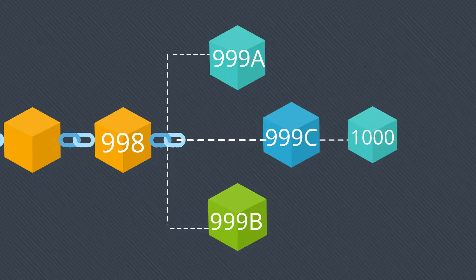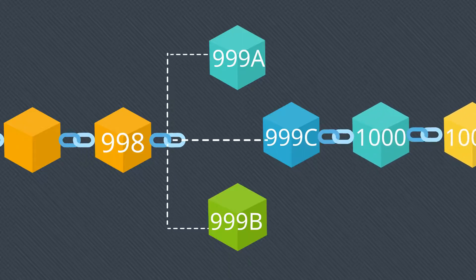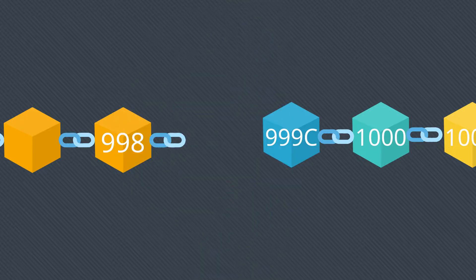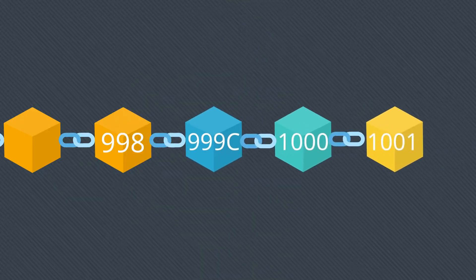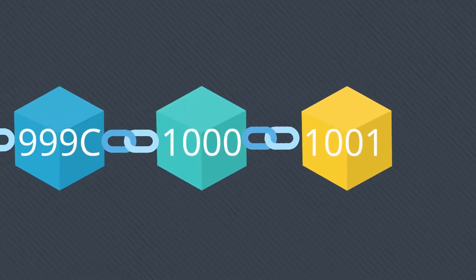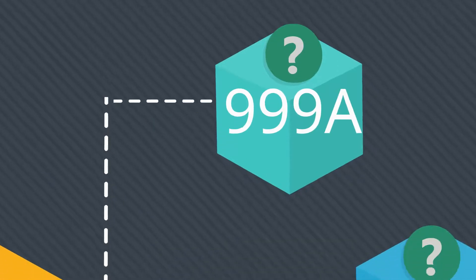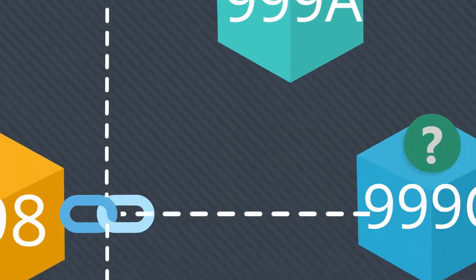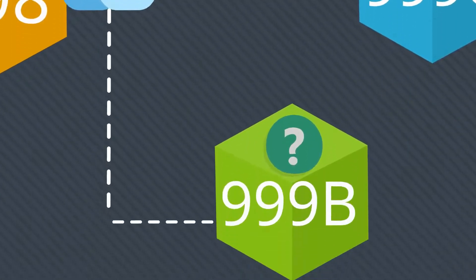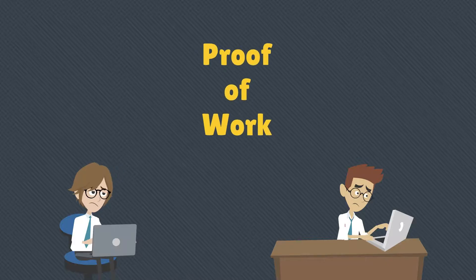In this case, Miner C had a better processor which was able to create a block faster than Miner A and B, and hence new blocks were created on top of block 999c. The longest chain is the one created by 999c, and it will keep on adding other blocks like 1000, 1001, and so on.